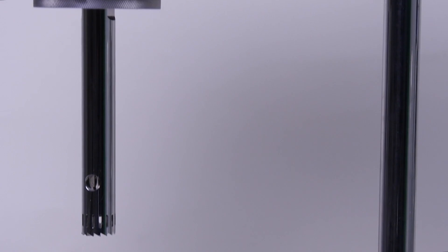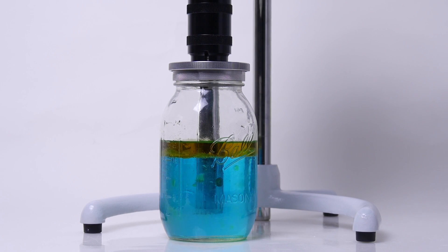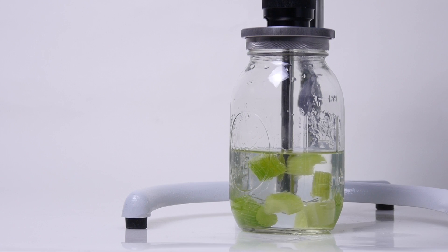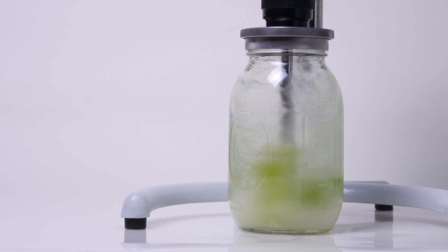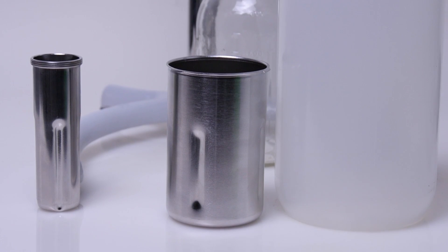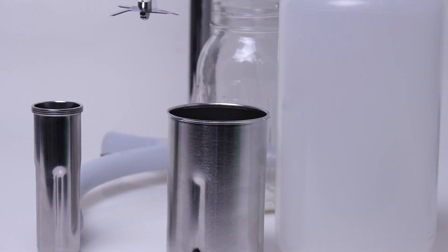Rotor stator generator probes can be used for vigorous sample disruption for open vessel processing or can be interchanged with blades inside the same sealed glass, plastic, or stainless steel jars.